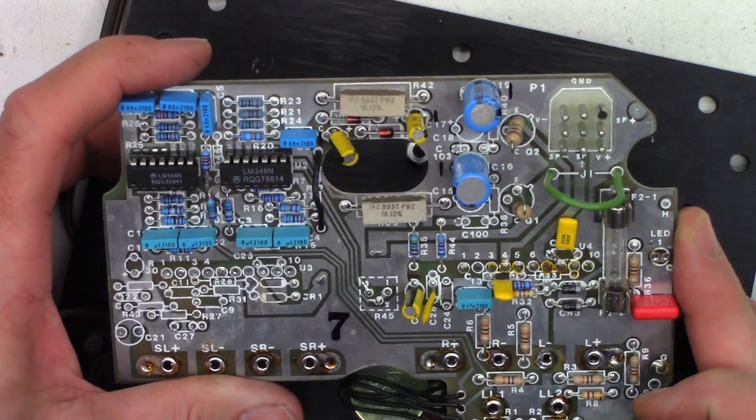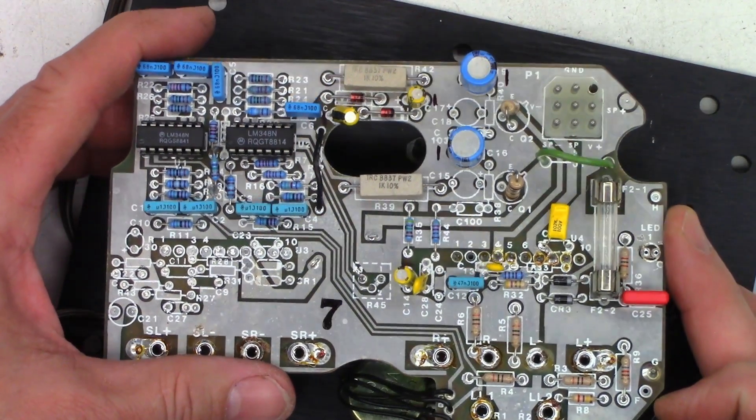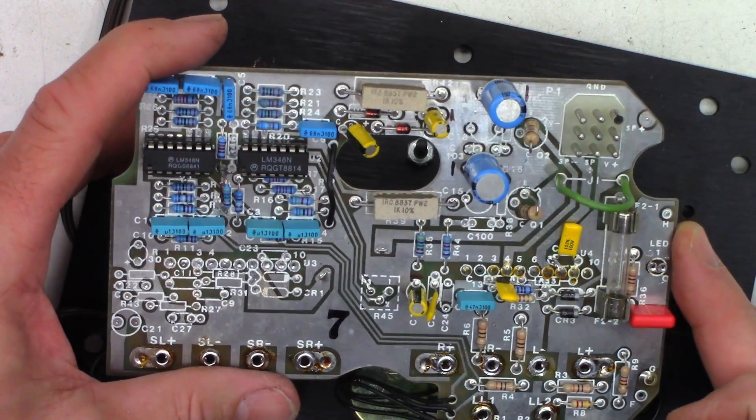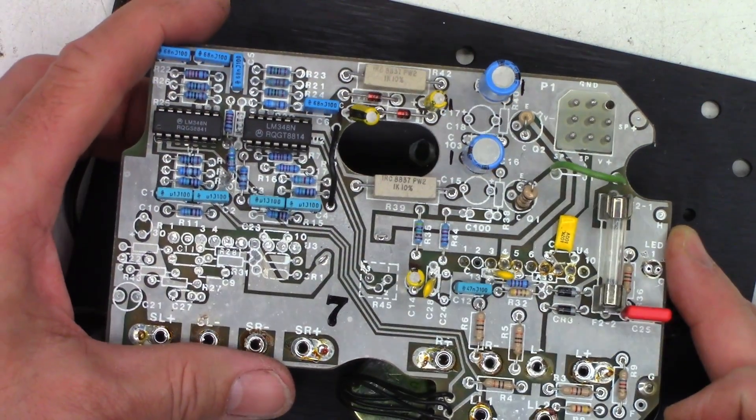So just like previously, always mark either the negative or the positive lead. Your choice. I mark the negative ones just to make sure I can get these caps back in in the same orientation. Because remember, sometimes the silk screening lies.